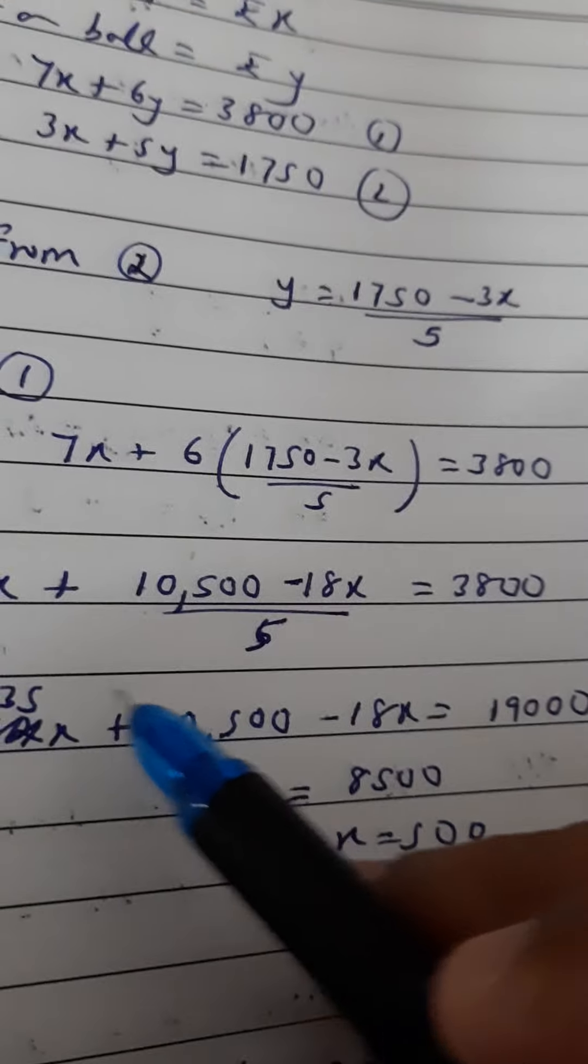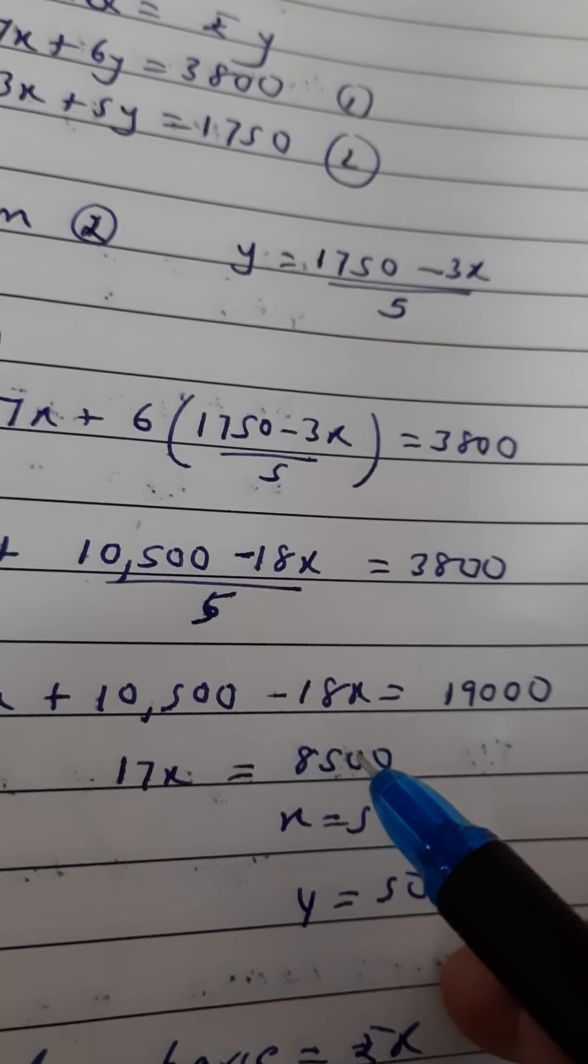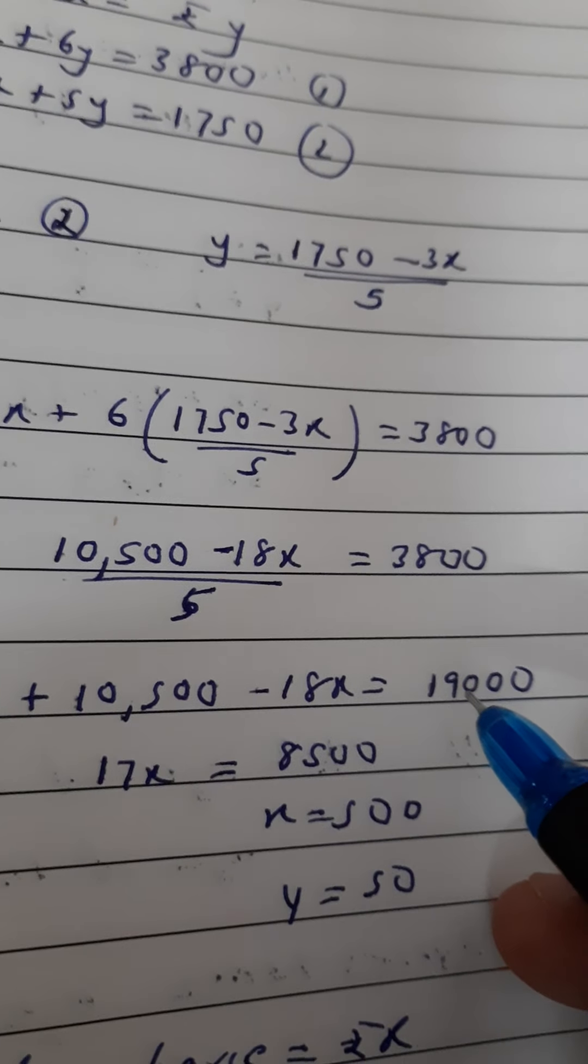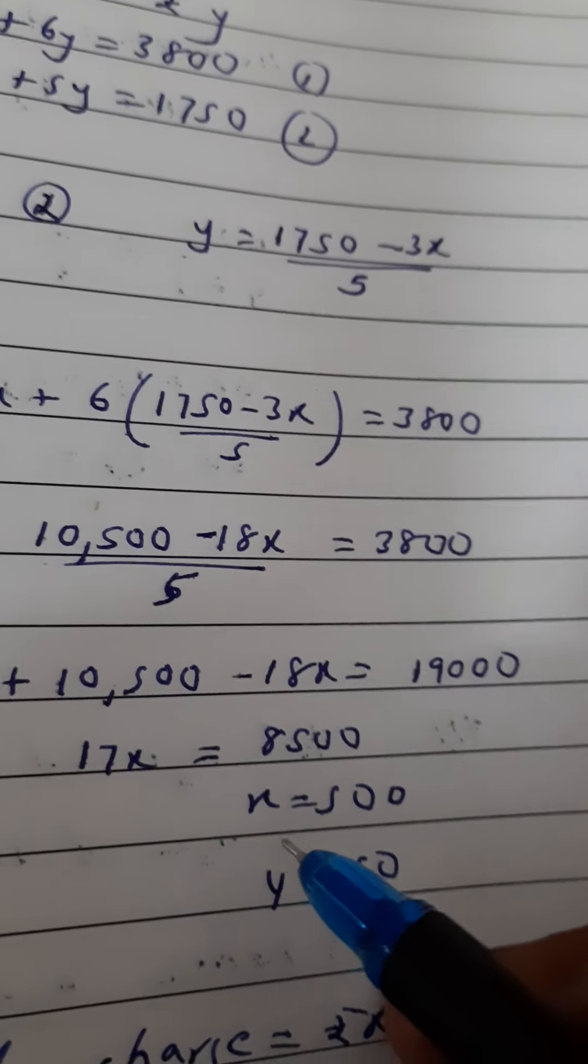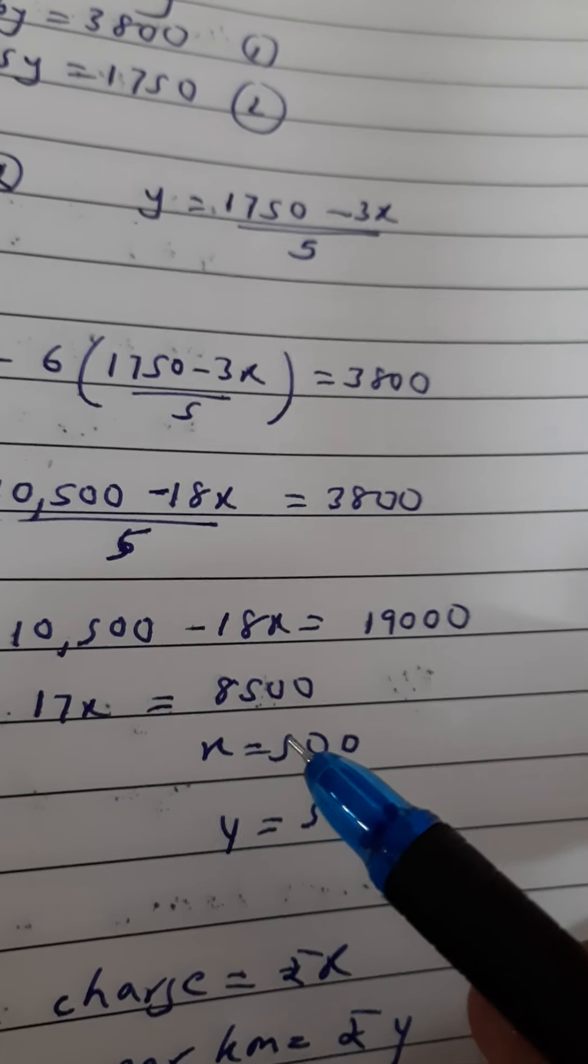So 17x, that is 35 minus 18, equals 17. 17x equals 8,500 because the 10,500 transferred here becomes 8,500. So x equals 8,500 divided by 17. The value of x is 500.